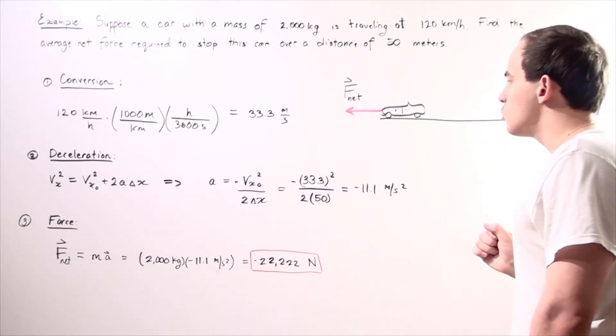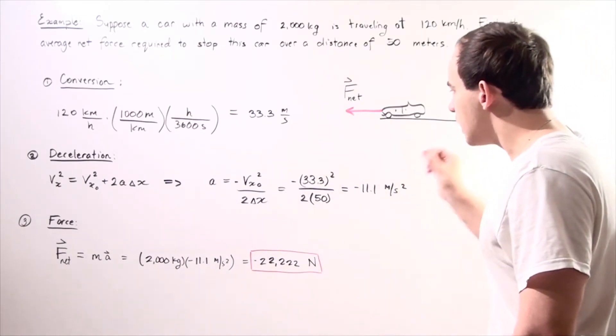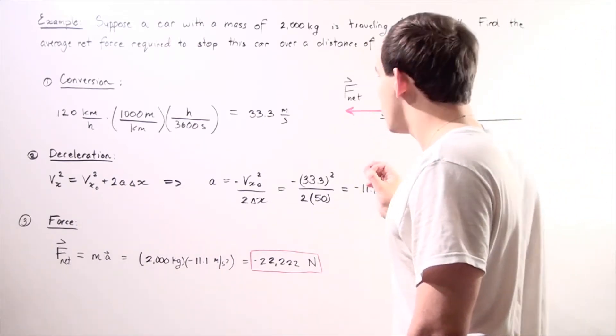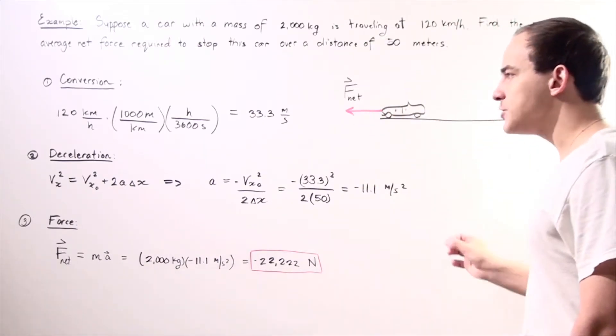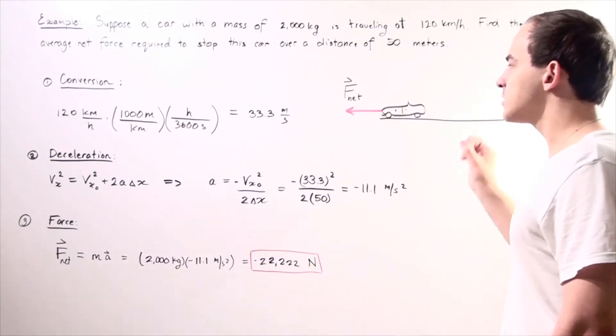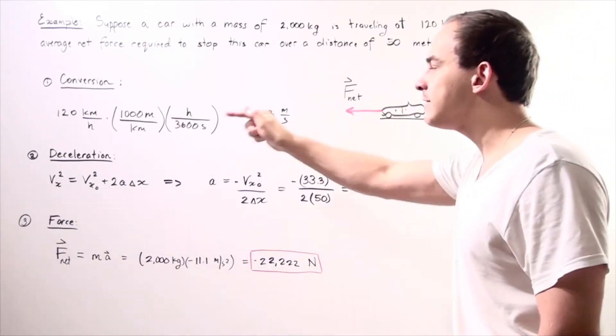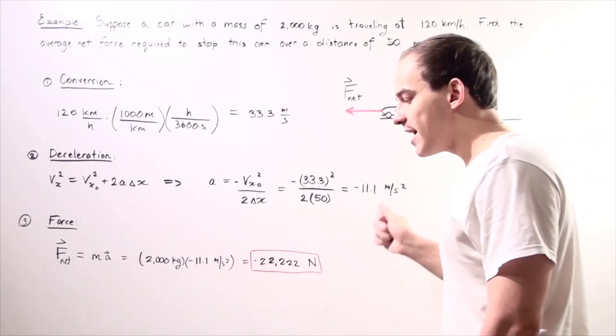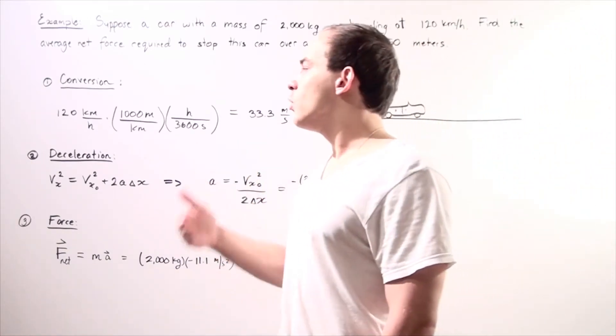But according to our second law of motion, if a net force does in fact act on our object, that object will begin to experience acceleration. And in this case, our acceleration will be in the negative direction, so that means our car is actually decelerating. Its velocity will decrease.